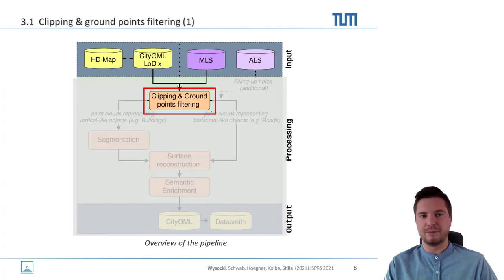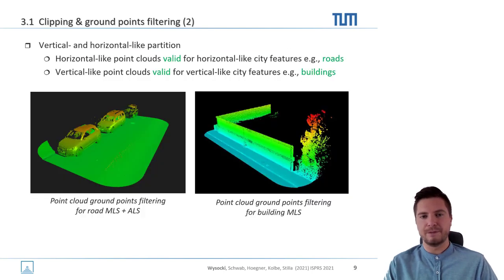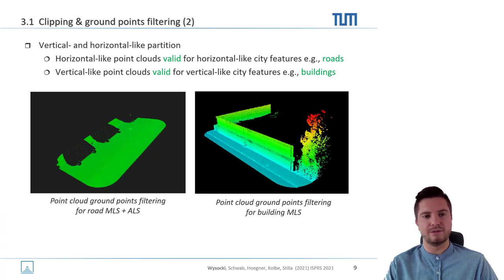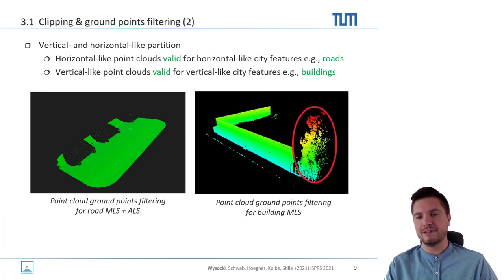Let us jump first to clipping and ground point filtering. This is a concept of vertical and horizontal-like partitioning. As shown on the left, a road depicted by point clouds can be represented sufficiently by horizontal-like points, so the vertical-like parts can be filtered out. However, for vertical-like objects such as a building facade, filtering horizontal-like points still leaves noise — for example, a tree within the existing search radius, as shown by the red circle.